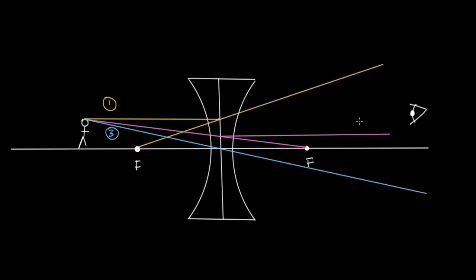Now, to work out where we see the image for this little man, what we have to do is trace these rays backwards, because our eye doesn't take into account that they've been bent through the lens. So this ray three has already been traced backwards, as has ray one. So let's just trace ray two backwards.